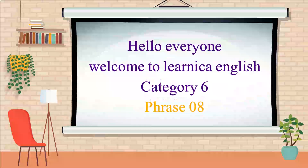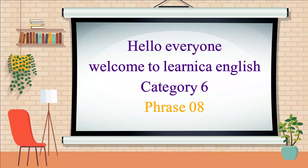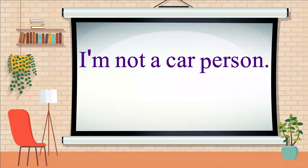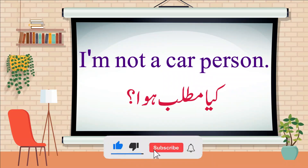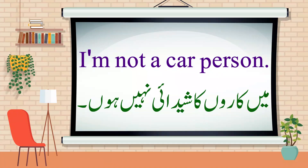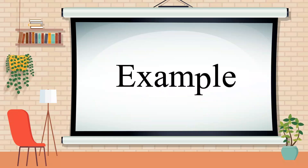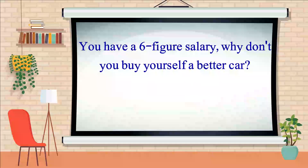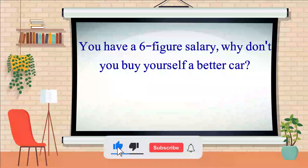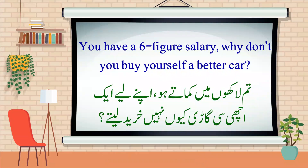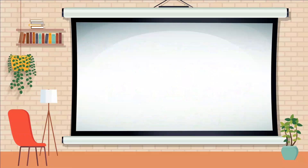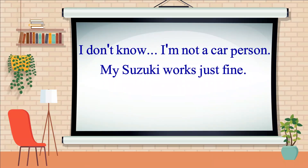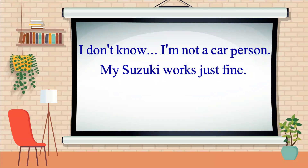Hello everyone, welcome to Learnica English. Today's phrase is 'I'm not a car person.' کیا مطلب ہوا؟ جواب ہے: میں کاروں کا شوقین نہیں ہوں۔ Example: 'You have a six-figure salary, why don't you buy yourself a better car?' — 'I don't know, I'm not a car person, my Suzuki works just fine.'